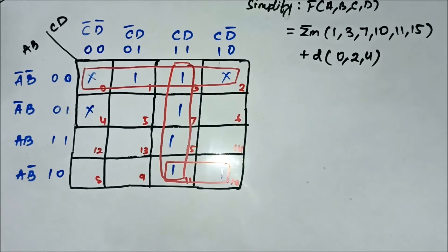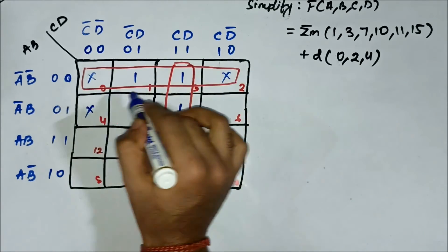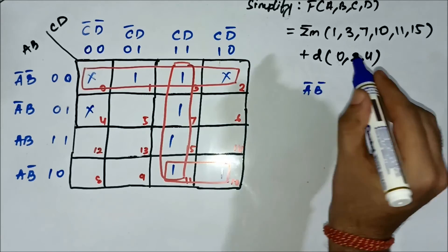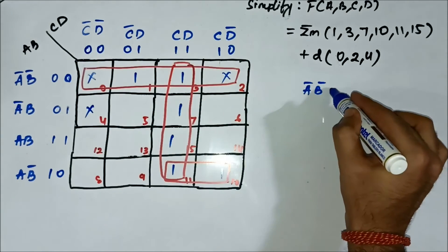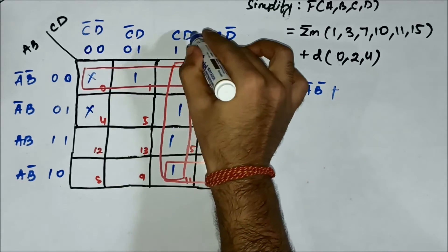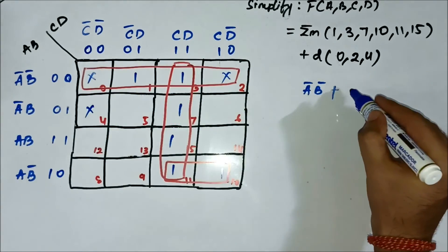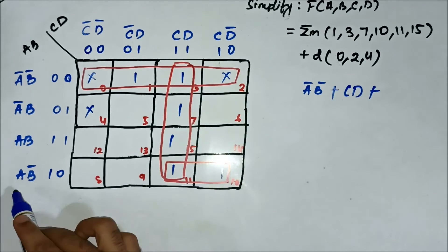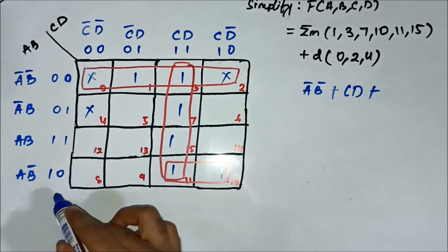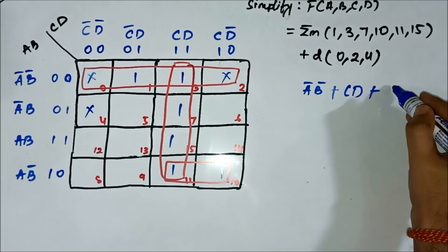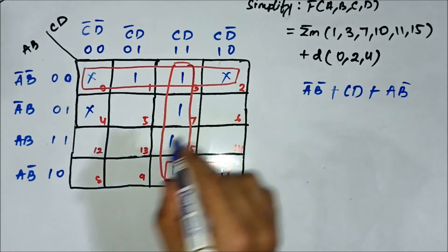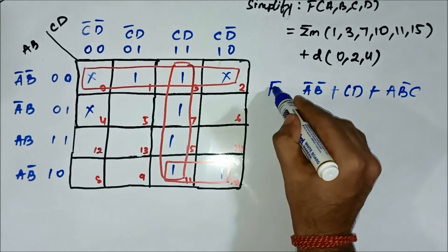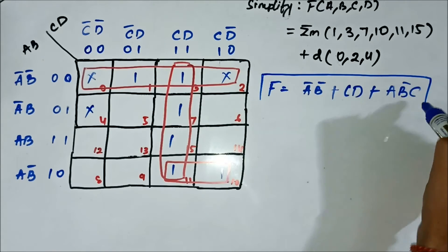Now we have to identify the common variables. For the first quad: A-bar and B-bar are common on the horizontal side, nothing on the vertical side. For the second quad: CD is common on the vertical side, nothing on the horizontal side. For the pair: AB-bar is common on the horizontal side and C is common on the vertical side. So this is the simplified Boolean expression.